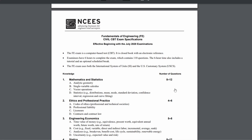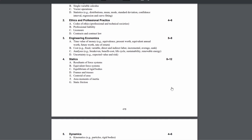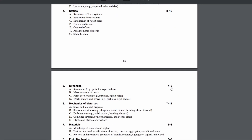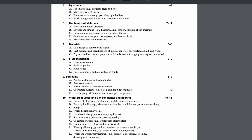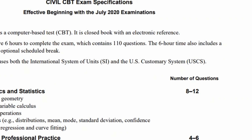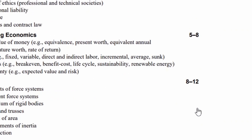You can find these specifications in your NCEES reference handbook on the NCEES website. If you scroll down to the bottom in the civil section, you will see a list of 18 different topics. It lets you know how many questions will be on the exam and how long you have to take the exam.